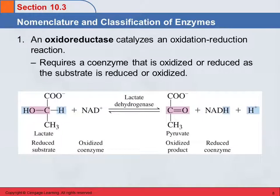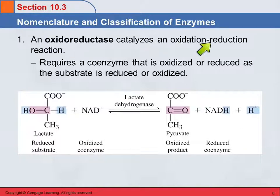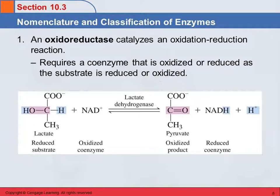Those are some general concepts about enzyme nomenclature. There are also several different classes of enzymes, each with subclasses. The first class is oxidoreductases — the name reflects oxidation-reduction — and these catalyze oxidation-reduction reactions. These enzymes have a coenzyme: the coenzyme is oxidized when the substrate is reduced, and reduced when the substrate is oxidized.